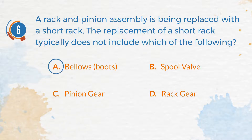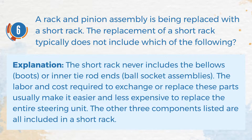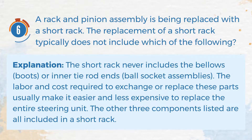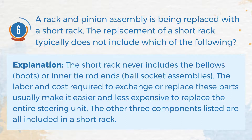The correct answer is A. Bellows boots. Explanation: The short rack never includes the bellows boots or inner tie rod ends, ball socket assemblies. The labor and cost required to exchange or replace these parts usually make it easier and less expensive to replace the entire steering unit. The other three components listed are all included in a short rack.